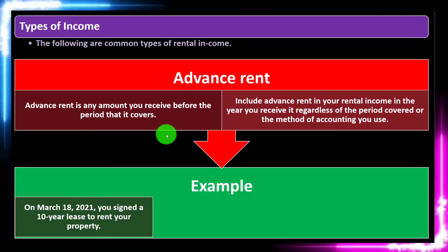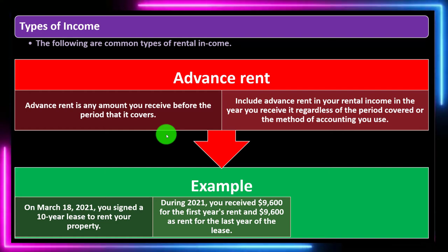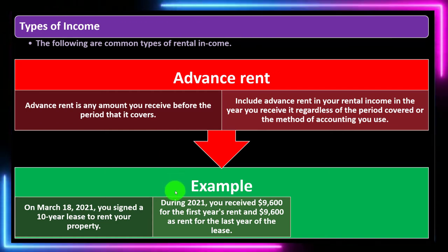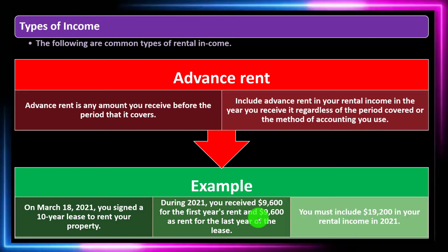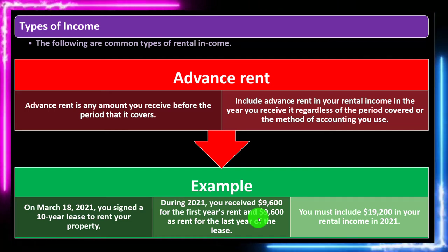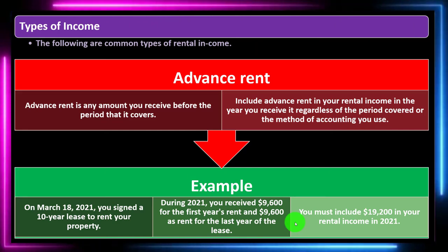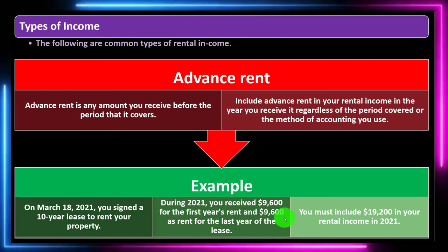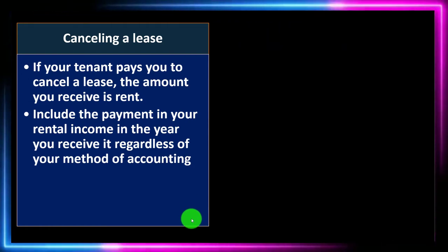Example: on March 18, 2021, you signed a 10-year lease. During 2021 you received $9,600 for the first year's rent and $9,600 as rent for the last year of the lease. That second $9,600 is an advanced payment — under accrual accounting it would be a liability — but you must include the full $19,200 in rental income in 2021.